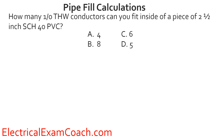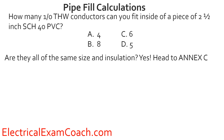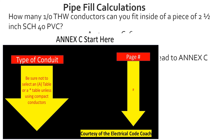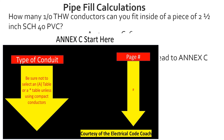Practice problem: How many 1/0 THW conductors can you fit inside a piece of 2.5-inch schedule 40 PVC? Are they all the same size and insulation? Yes. Head to Annex C, find schedule 40 PVC — not the A version — cross to the page number, read the black bold heading to confirm the right table. Find THW insulation, find 1/0 wire size, come across the top to 2.5-inch conduit, tee off, and the answer is 8 conductors.